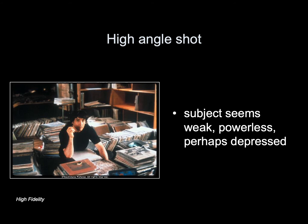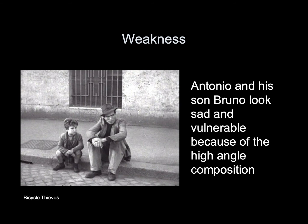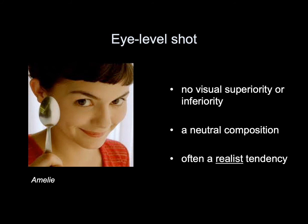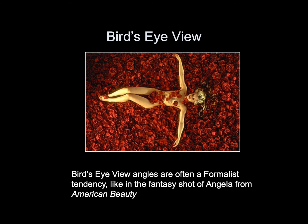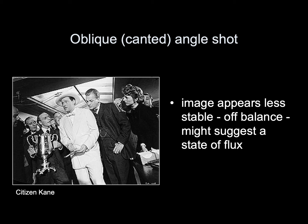High angle shot: the subject seems weak, powerless, perhaps depressed. Antonio and his son Bruno look sad and vulnerable because of a high-angle composition. Eye level shot: no visual superiority or inferiority — a neutral composition and often a realist tendency. Bird's eye view: an extreme high angle, somewhat disorienting because it's not the way we normally see things — often a formalist tendency, like this fantasy shot of Angela from American Beauty. Oblique or canted angle shot: the image appears less stable, off balance, and might suggest a state of flux.